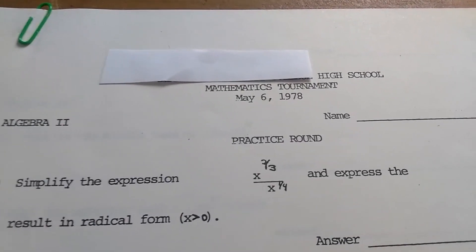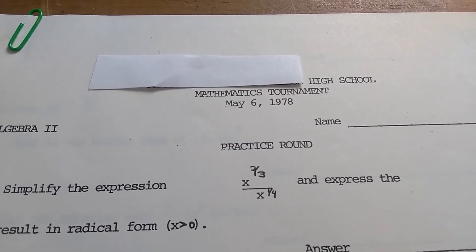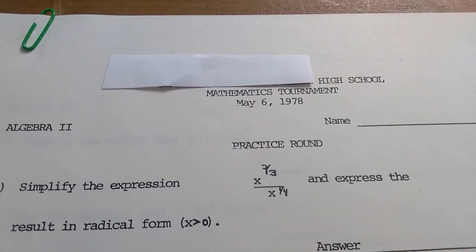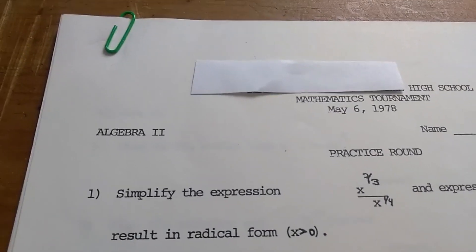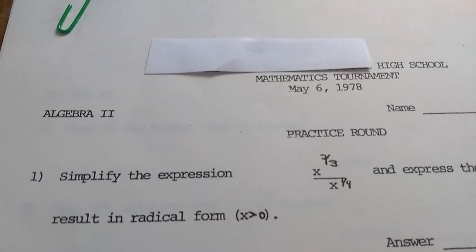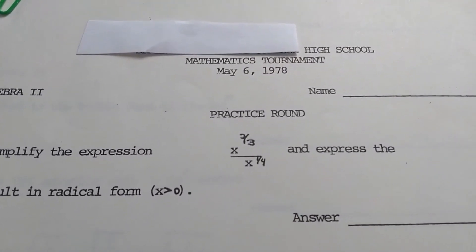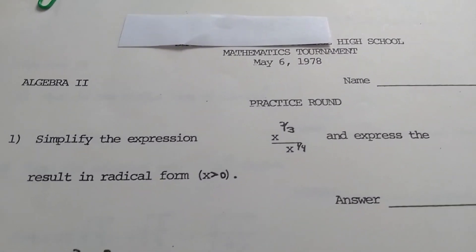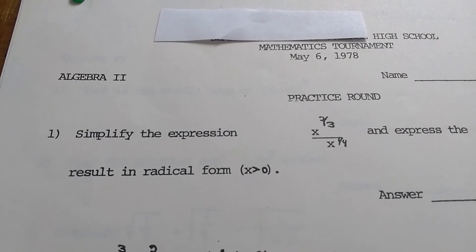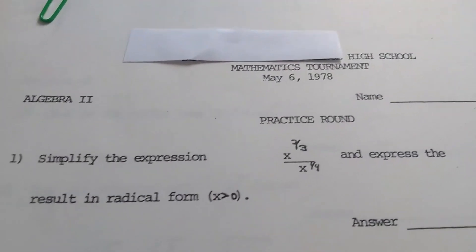So this is the first page of this contest. It has the date May 6th, 1978. That is so old. Wow. Algebra 2. So this is for high school students. And this would have been a test that many of them took in 1978 on that day, on May 6th.